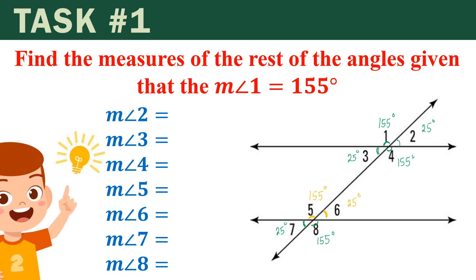So since we're done already identifying the angle measures of each angle formed here, we may now organize our final answers. Measure of angle 2 will be 25 degrees. Take note to always write the unit of measurement for angle measure, and that would be degrees. Next, for angle 3, we have 25 degrees as well.